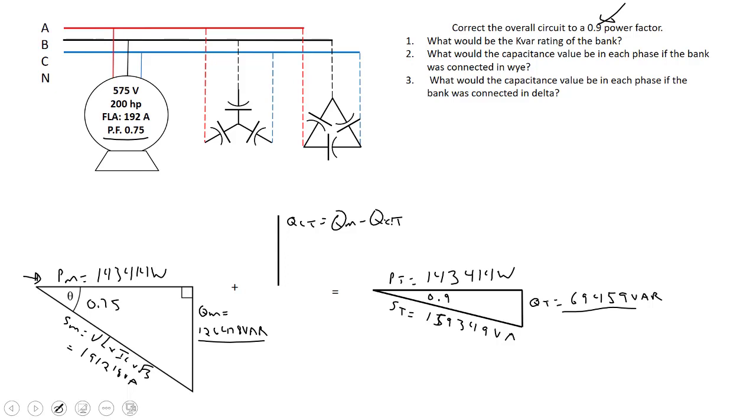So that's going to be if I take 126,478 VAR and subtract off 69,459, we come to about 57,019 VAR. So the first question, what would be the KVAR reading of the bank required to correct the circuit to 0.9? We're looking at about a 57 KVAR bank.